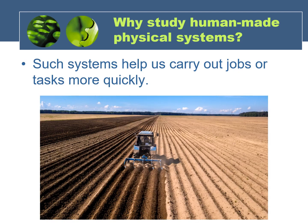One way that such systems help us is by letting us complete jobs way more quickly than we would normally be able to do. For example, using heavy machinery — which are human-made physical systems — a farmer can plow and plant a large field by him or herself. Without the machinery, this would take much longer, and it might not even be possible.